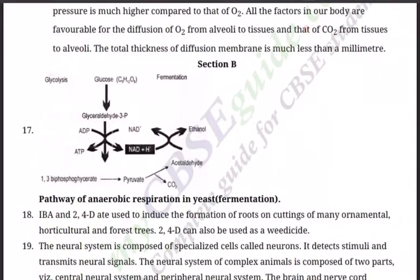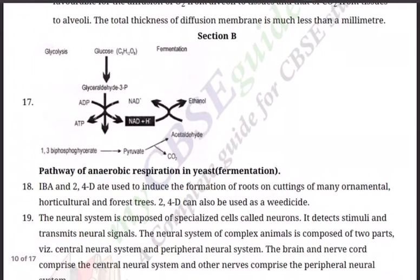Hello boys, welcome back to another session of video tutorials. This session is meant for Class 11 biology students, for 15th February 2021, as we are in revision mode. We are revising the entire syllabus using CBSE sample papers. We have already discussed sample paper one and are going ahead with sample paper two. In Saturday's session we discussed Section A; now we discuss Section B, which consists of nine questions of two marks each — 18 marks total. Section A 22 plus Section B 18 equals 40 marks.